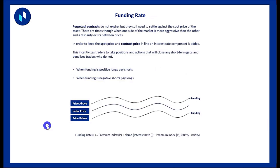Perpetual swaps are quite different — they do not expire, but similar to traditional futures they still need to settle against the spot price. The index you see on the exchange is made up of a collection of spot prices. There are times when the spot price is vastly different from the futures price on the exchange. Because there's a lot more leverage and notional capital at stake on a futures exchange, a significant disparity can develop between the spot price and the perpetual swap price.